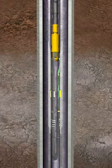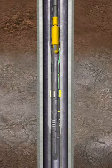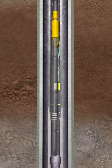Jarring up releases the lock snap ring, allowing the dog's expander mandrel to move upward, thus retracting the dogs. The plug is then pulled back to surface.